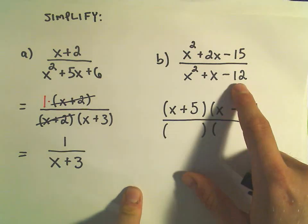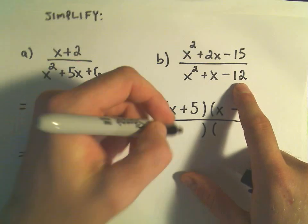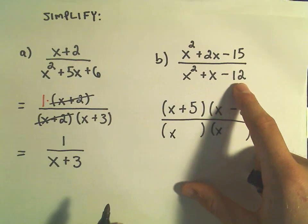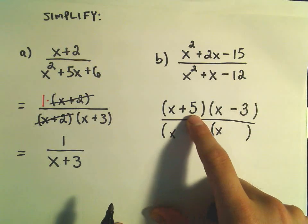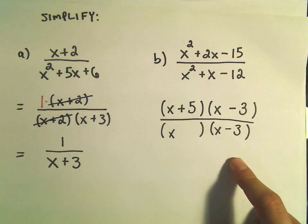There's no way it will be x plus 5 because it wouldn't be x plus 5 because I'm looking for two numbers that multiply to 12. Well, 5 is not a factor of 12. So I'm thinking it probably has something to do with the x minus 3.